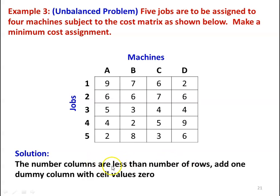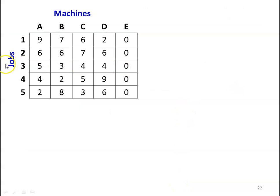Since the number of columns are less than the number of rows, add 1 dummy column with the cell value 0. Now we have 5 machines. E is the dummy machine with cell values equal to 0 and there are 5 jobs, so it is now balanced.